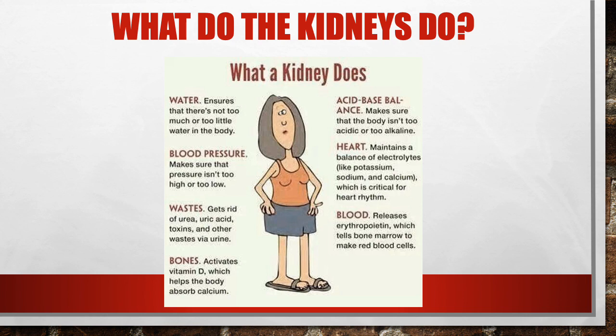The kidneys are also responsible for activating vitamin D, which helps you absorb calcium — really important for bone health. They maintain acid-base balance by secreting bicarbonate to neutralize acid. They also maintain fluid and electrolyte balance, especially potassium, sodium, and calcium. Additionally, the kidneys secrete EPO, or erythropoietin, which tells your bone marrow to make more red blood cells — so without this, you can develop anemia.